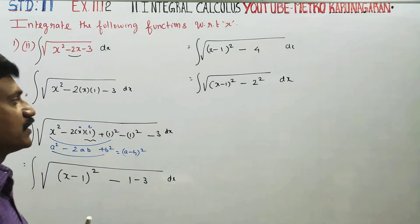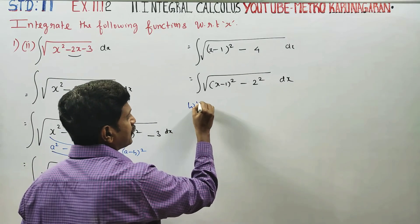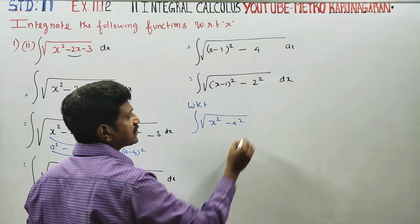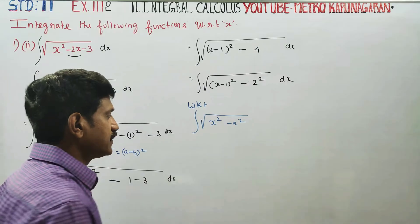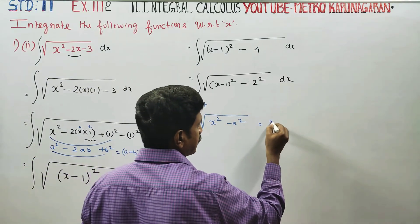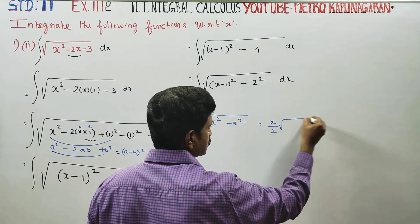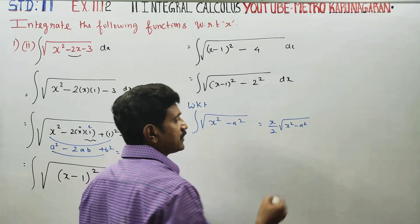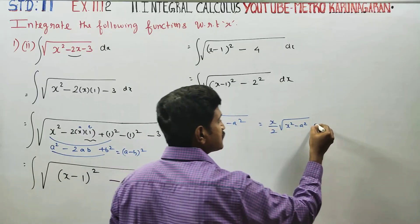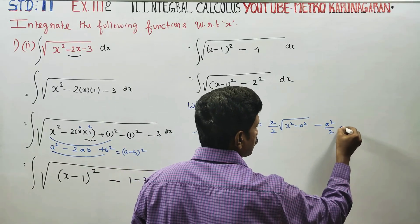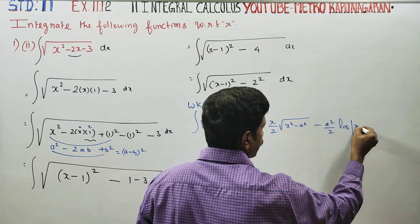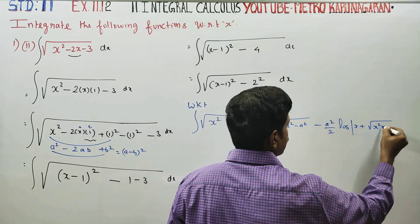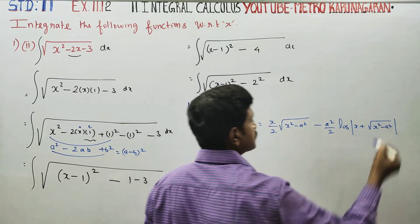Now we have a ready-made formula. We know that there is a formula for the integral of the square root of x squared minus a squared. This ready-made formula gives: x by 2 times square root of x squared minus a squared, minus a squared by 2 times logarithm of x plus square root of x squared minus a squared. This is the formula.